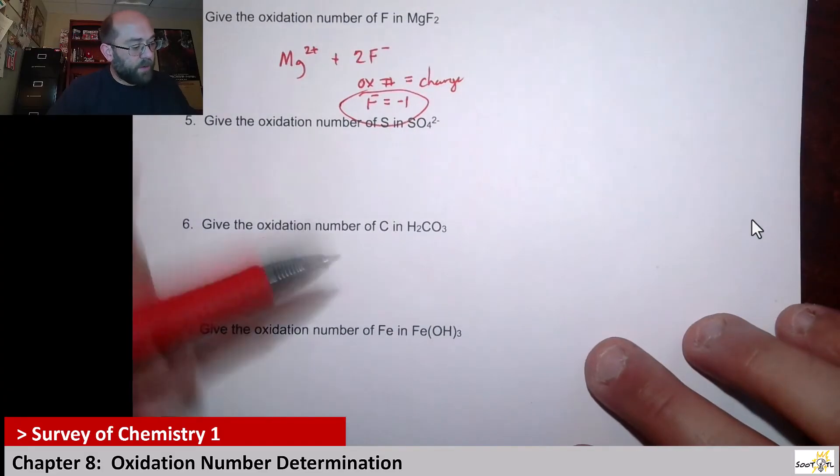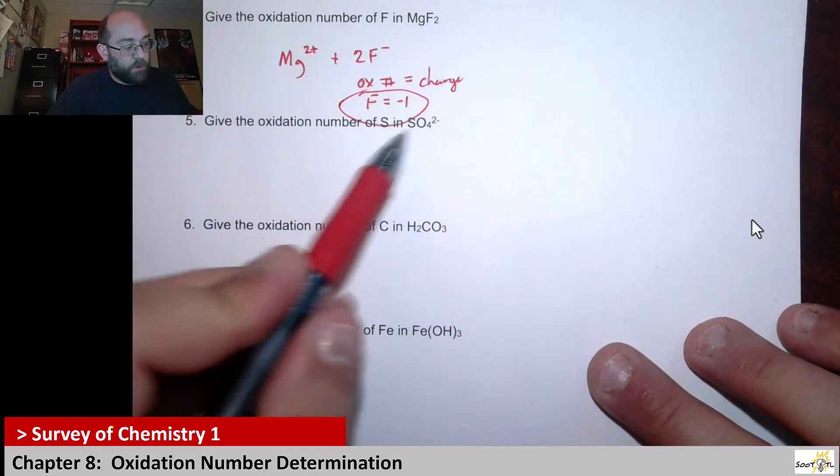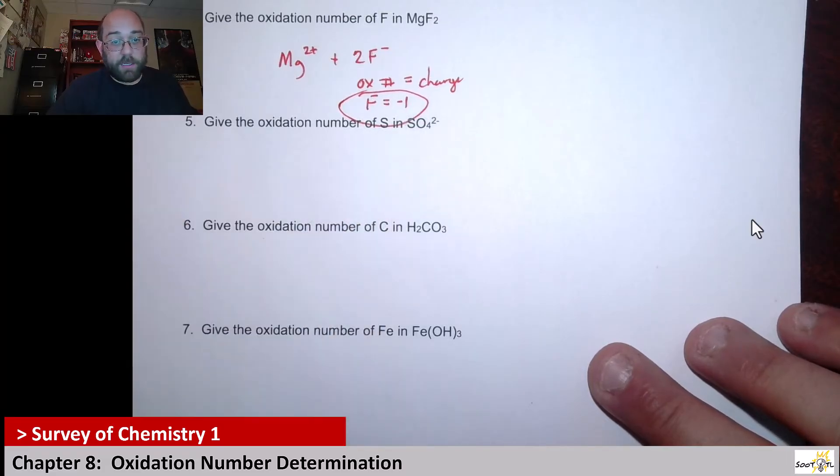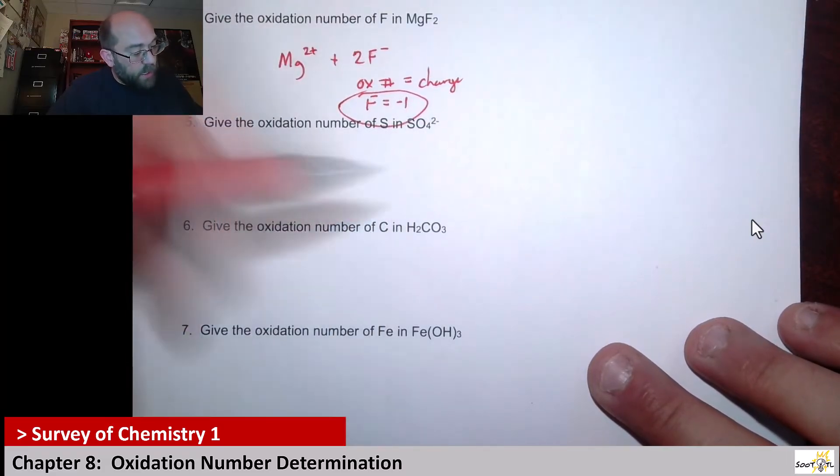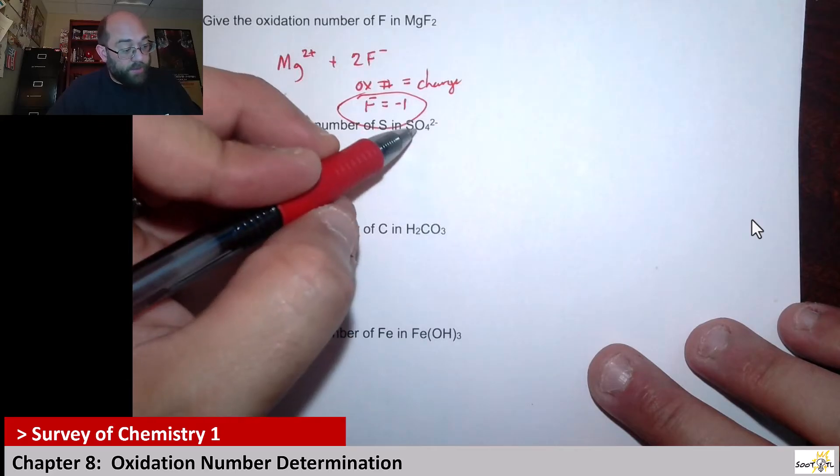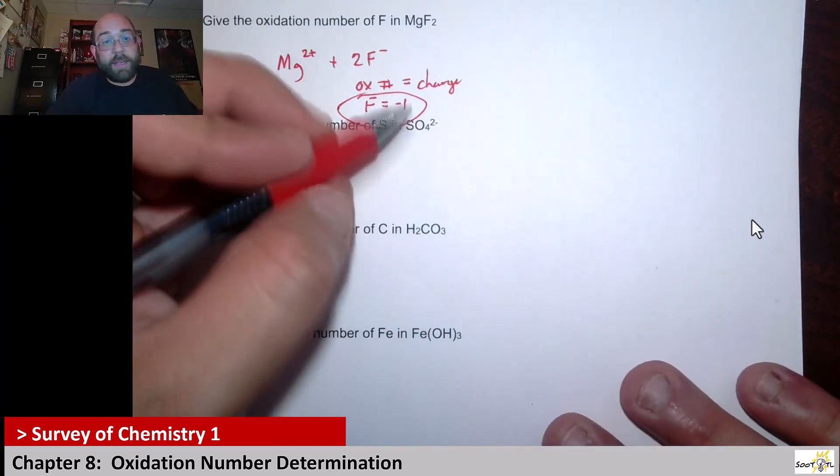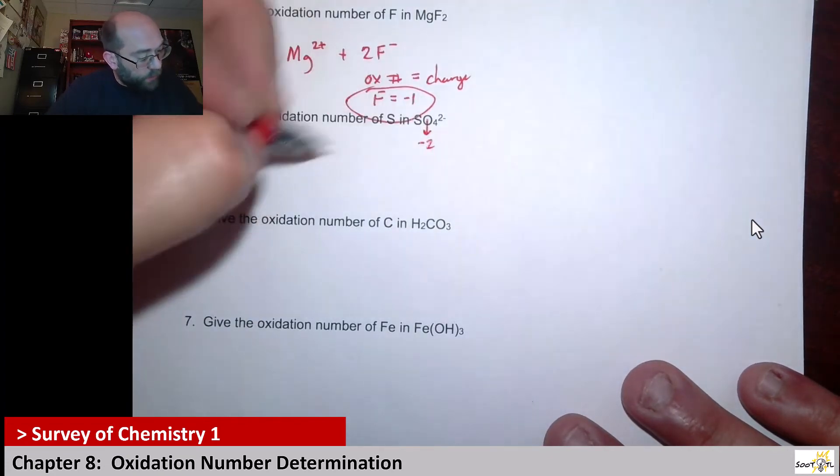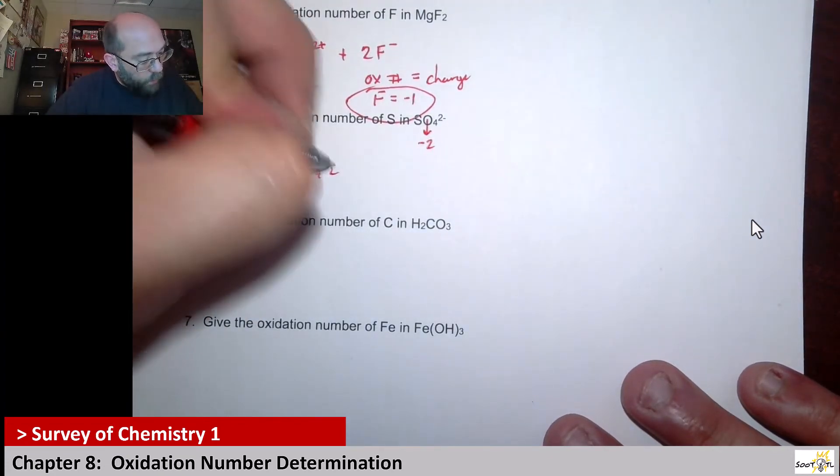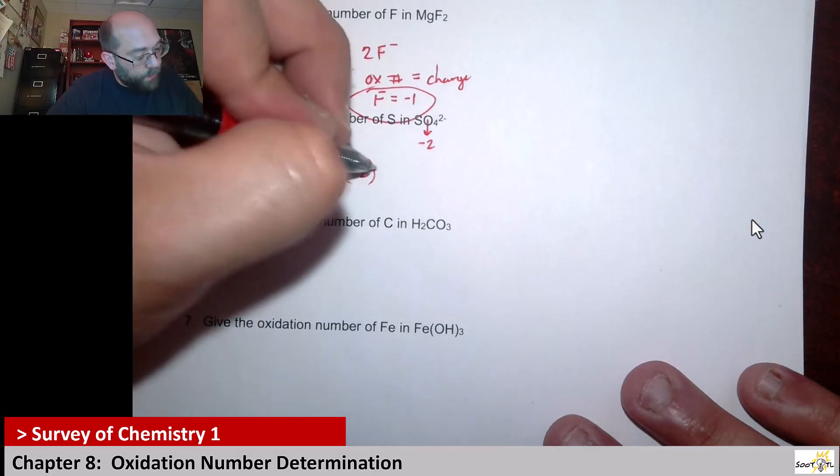Next up, we have—they want to know about the sulfur in sulfate ions. So what do we got here? We've got oxygens, which we know, as long as they're not part of a peroxide and none of these are, we know that it's negative two, each one of those.